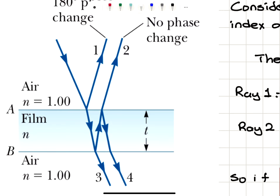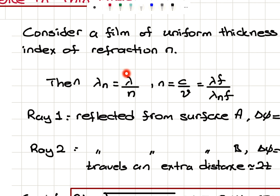When a ray is incident on this film, it will be partially reflected and partially transmitted. The transmitted portion will be refracted, resulting in a loss in intensity. Because of conservation of energy, photons passing through the interface will have the same frequency, but the light will slow down in the medium. Its wavelength will decrease by a factor of n, so the wavelength inside the film is lambda divided by n, since n equals c over v, and lambda_n equals lambda divided by n.